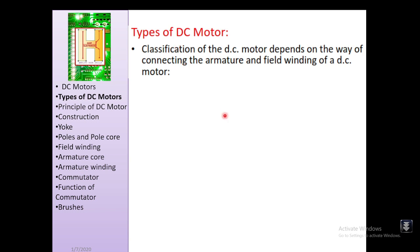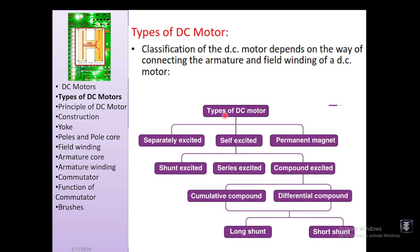The classification of DC motors depends on the way the armature and field winding are connected. DC motors are classified as separately excited, self-excited, and permanent magnet. In the self-excited category, we have shunt type, series type, and compound type. Compound types are further divided into cumulative and differential, and each has long shunt and short shunt sub-categories.